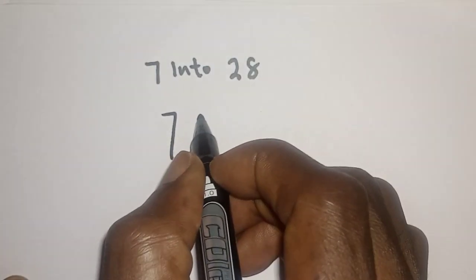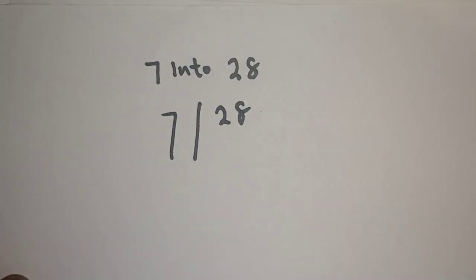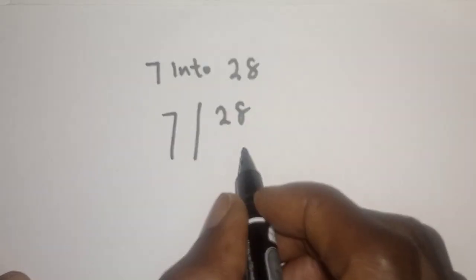We have seven, then divide by 28. Now let's see, seven into two, this is one.